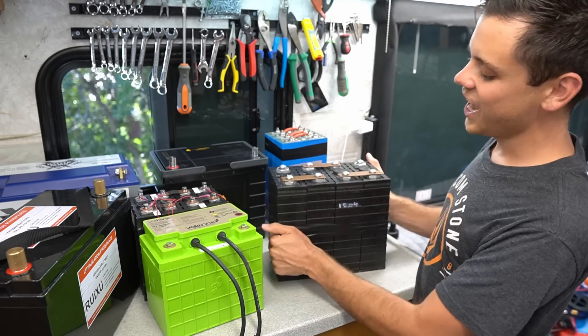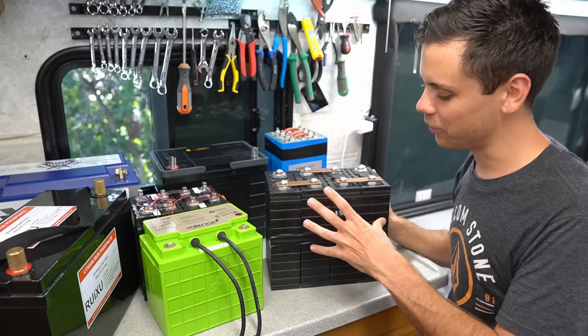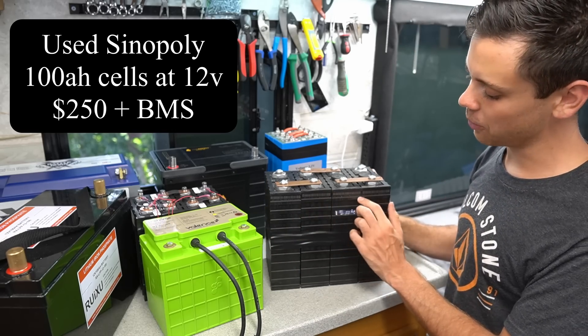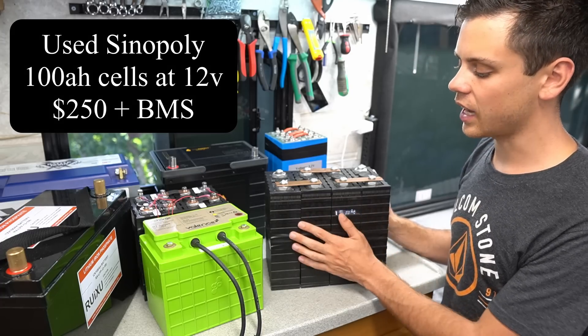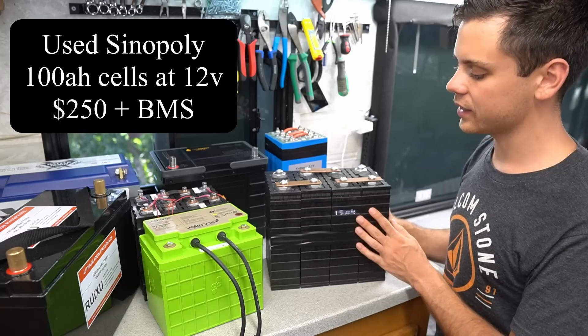Over here we have a 100 amp hour 12 volt prismatic cell battery with Xenopoly. These are mismatched cells. They also have been cycled lots and lots of times. These look pretty nasty.